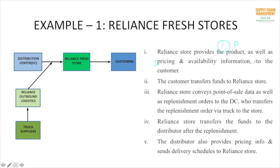If a customer wants a particular product and can't find it, a store executive helps out. If the product is not there, the customer can get information on its next availability from the executive — that's also a flow of information. Whenever a customer purchases the product, they pay the Reliance store, which is the flow of funds. Reliance then provides point-of-sale data and replenishment orders to the distribution center.